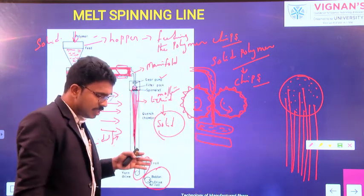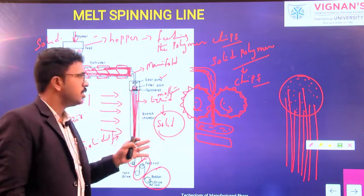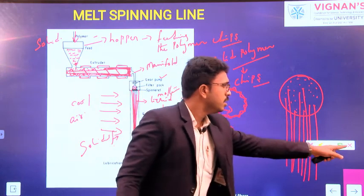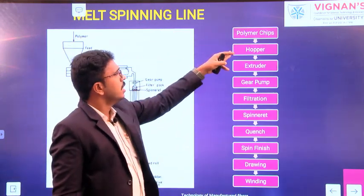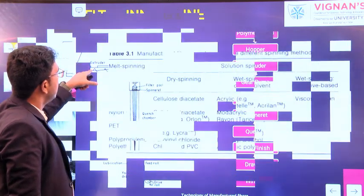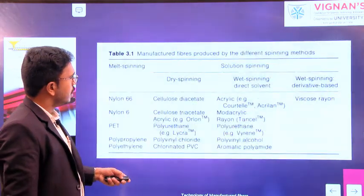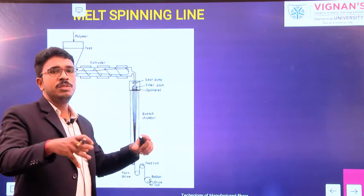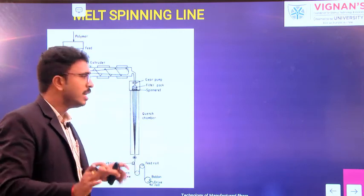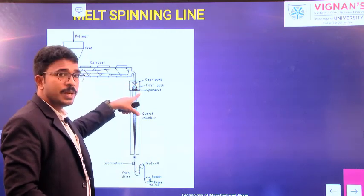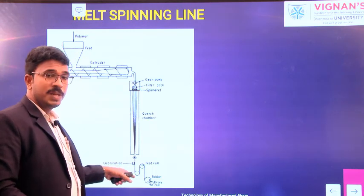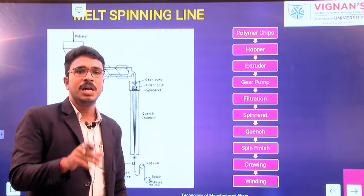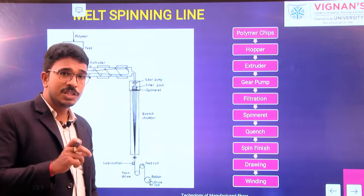This is how we are producing continuous length of filaments using this melt spinning line. These are all the various elements: polymeric chips, hopper, extruder, manifold — which distributes the molten polymer solution for the different spinning lines — gear pump, filter pack, spinneret, quenching chamber, spin finish application, drawing, and finally winding onto bobbins. These are all the different elements and the function of each and every element.